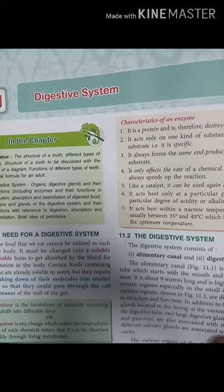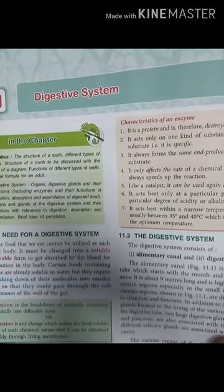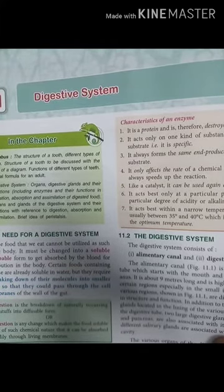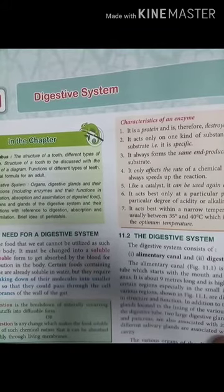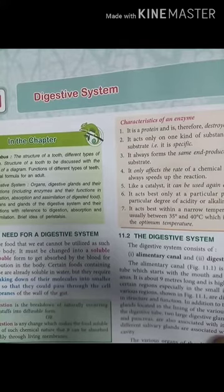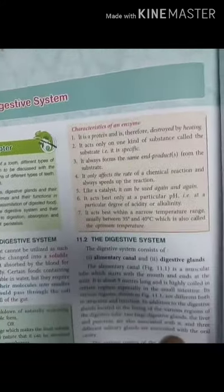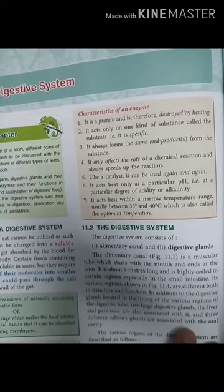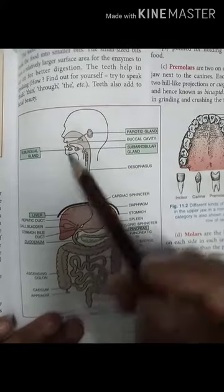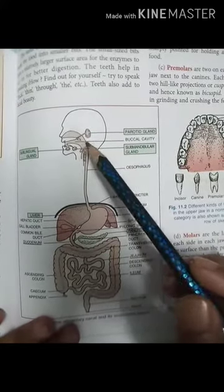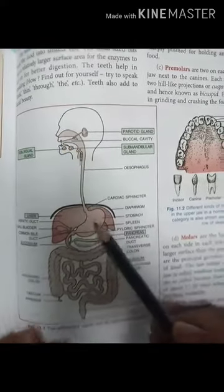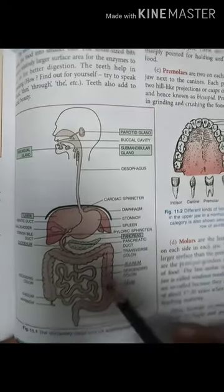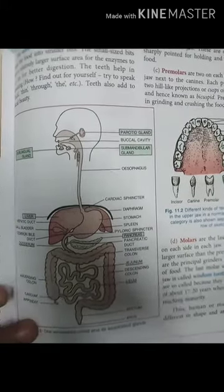The simpler form can be absorbed by the wall of the alimentary canal for their transportation to each and every part of the body. This digestive system consists of two parts: the alimentary canal and the associated digestive gland. Alimentary canal is a long muscular tube that starts from the mouth and ends at the anus. It is about 9 meters long and highly coiled, especially in the small intestinal region.